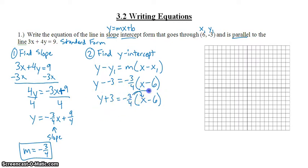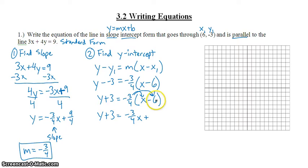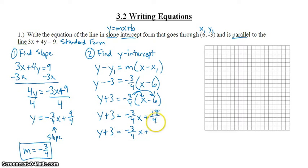Now I need to solve for y. Distribute my negative 3-fourths. A negative times a negative gives me a positive. 3-fourths times 6 gives me 18-fourths. 18-fourths can be simplified — 18 and 4 are both divisible by 2. So if I divide 18 by 2 I get 9, and when I divide 4 by 2 I get 2. So 18-fourths in simplest terms is 9-halves.